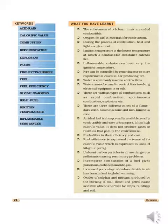Fire can be controlled by removing one or more of the requirements essential for producing fire. These requirements are: a combustible substance, the support of combustion (oxygen), and reaching the ignition point. By removing any one of these, a fire can be controlled.